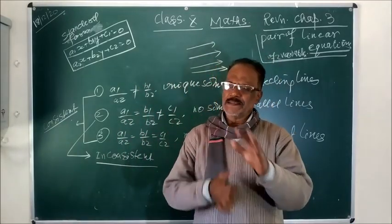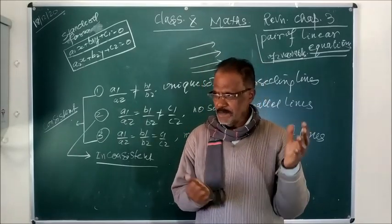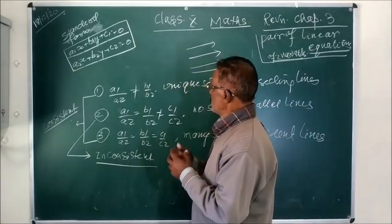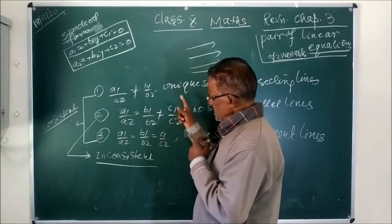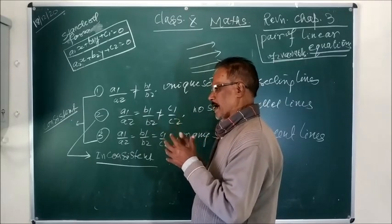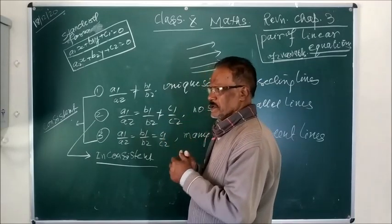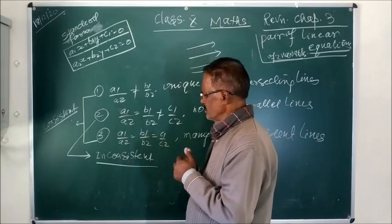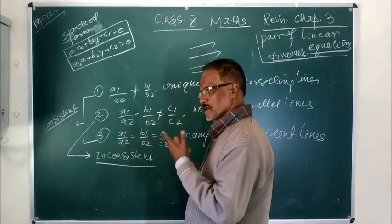Cross multiplication method has been deleted from the syllabus. So you will concentrate on only three: solving by graphical method, solving by substitution, and solving by elimination. So these are the three methods, and according to these conditions and properties, you can know — without solving — whether the given equations have a solution or not.